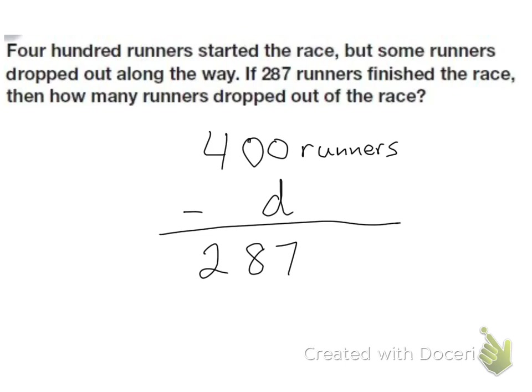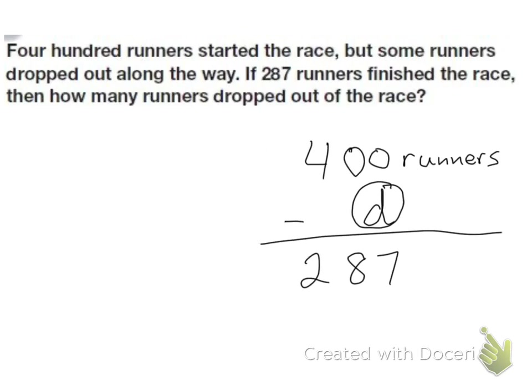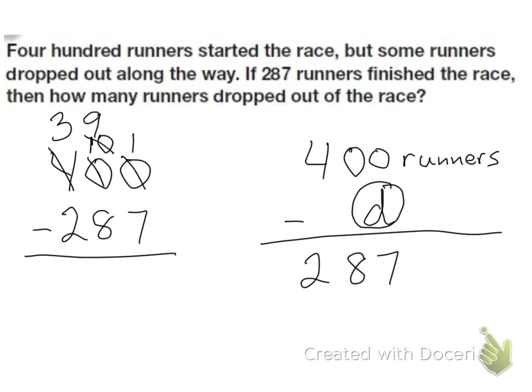So we know that when the second number is missing in a subtraction problem, I have to subtract to find it. So we're going to take 400 and subtract 287. So I need to borrow 100. The 100 becomes 10 tens. I subtract that, borrow, and we get 10 ones. 10 minus 7 is 3. 9 minus 8 is 1. 3 minus 2 is 1. So 113 runners dropped out of the race.